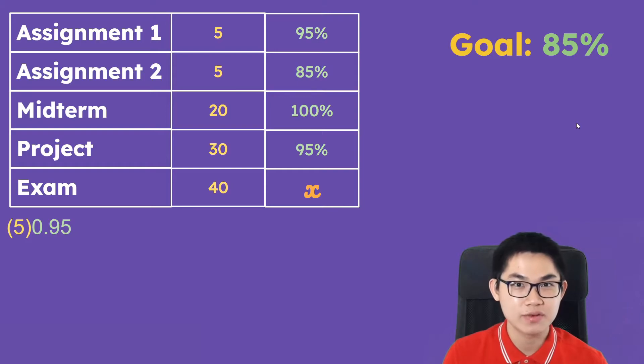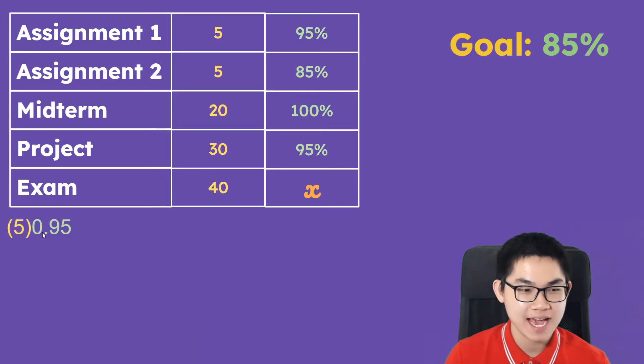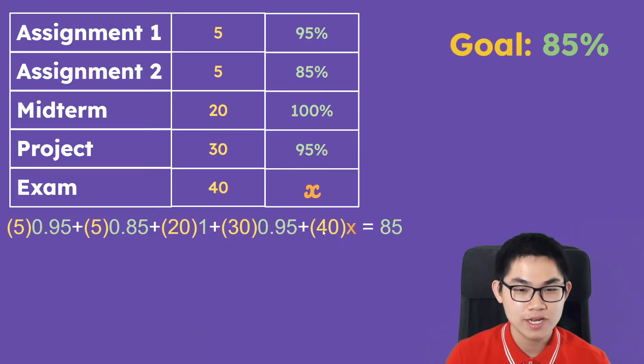Well, it's very easy to calculate. You take 5 times 95%, but we're going to write it in decimal form. So 5 times 0.95, then plus 5 times 85%, or 0.85, plus 20 times 100%, and 100% is just 1, plus 30 times 0.95, and then finally plus 40 times x, equal to 85.